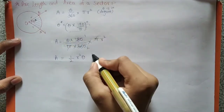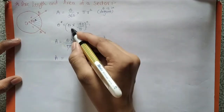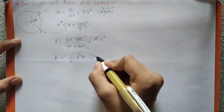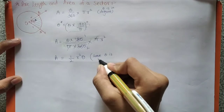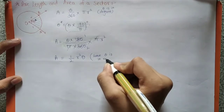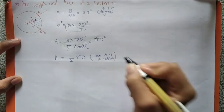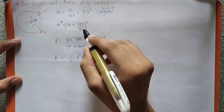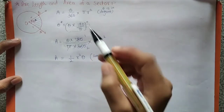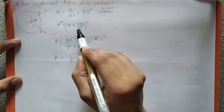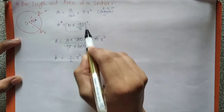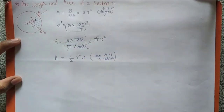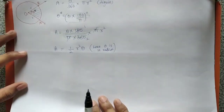यहाँ पर ये जो theta है, ये किस में है? Radian में है। Here, theta is in radian. आप कहेंगे कि हमने तो theta को degree में convert किया है, लेकिन theta into 180 upon pi ये degree में है, न की theta itself।